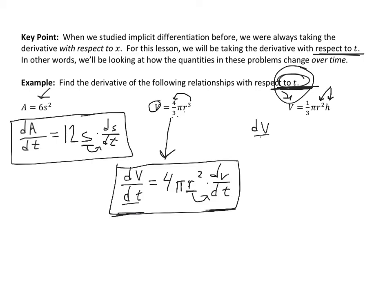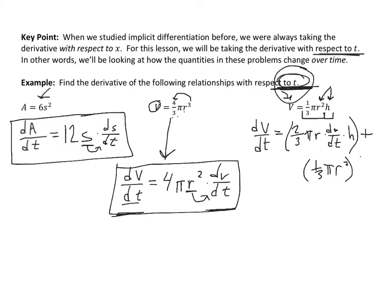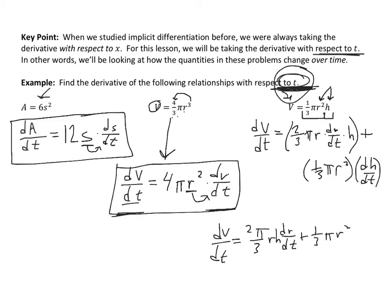The left-hand side gives dV/dt. On the right-hand side, starting with 1/3·π·r²·h, I use the product rule: the derivative of the first part brings the 2 down, giving (2/3)π·r·dr/dt, and I leave h alone. Then for the second half of the product rule, I leave 1/3·π·r² alone and take the derivative of h, which gives dh/dt since h is not t. So the full expression is dV/dt = (2π/3)·r·h·dr/dt + (1/3)·π·r²·dh/dt.